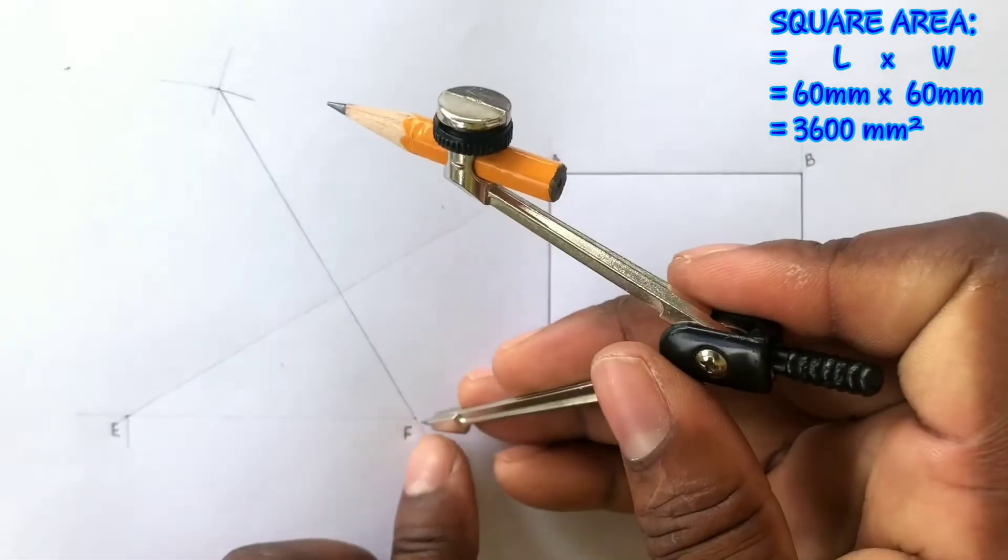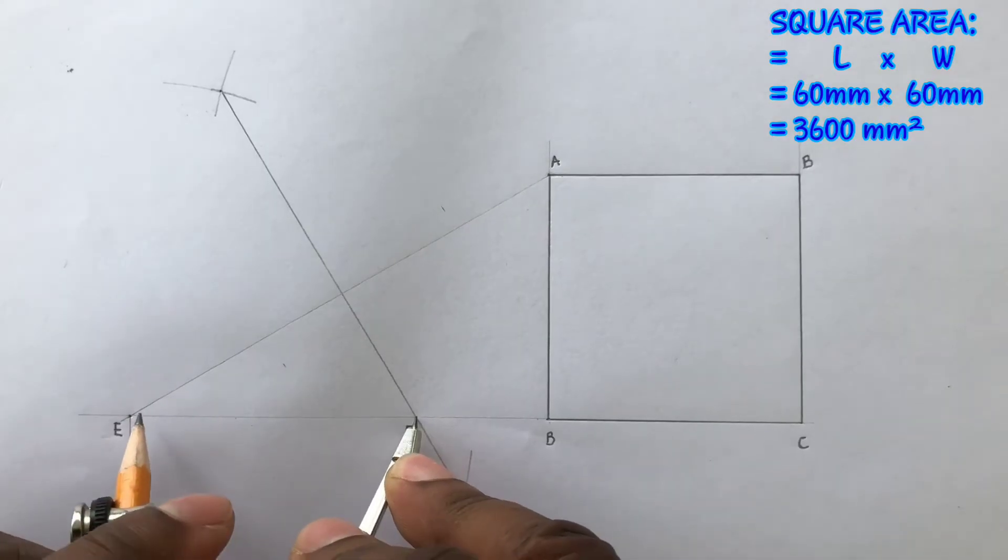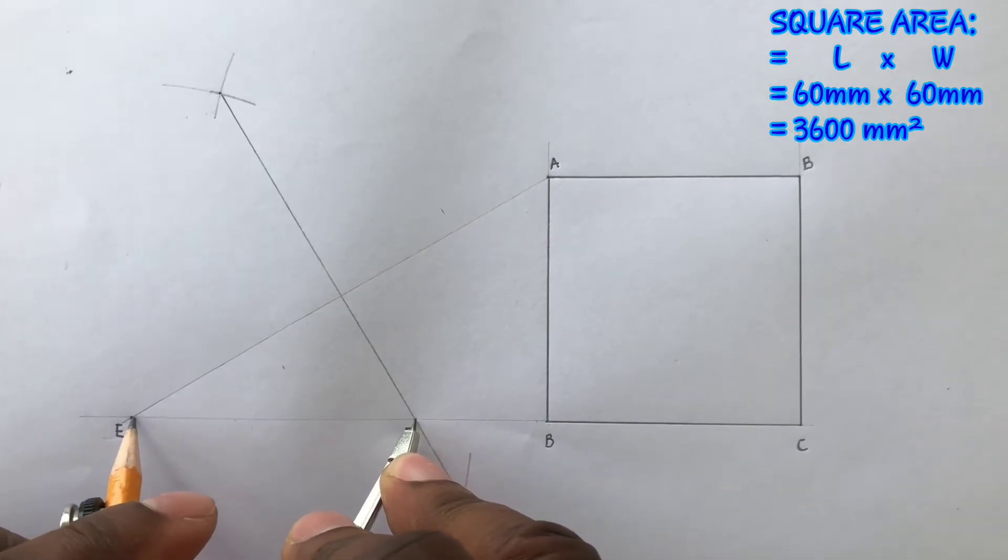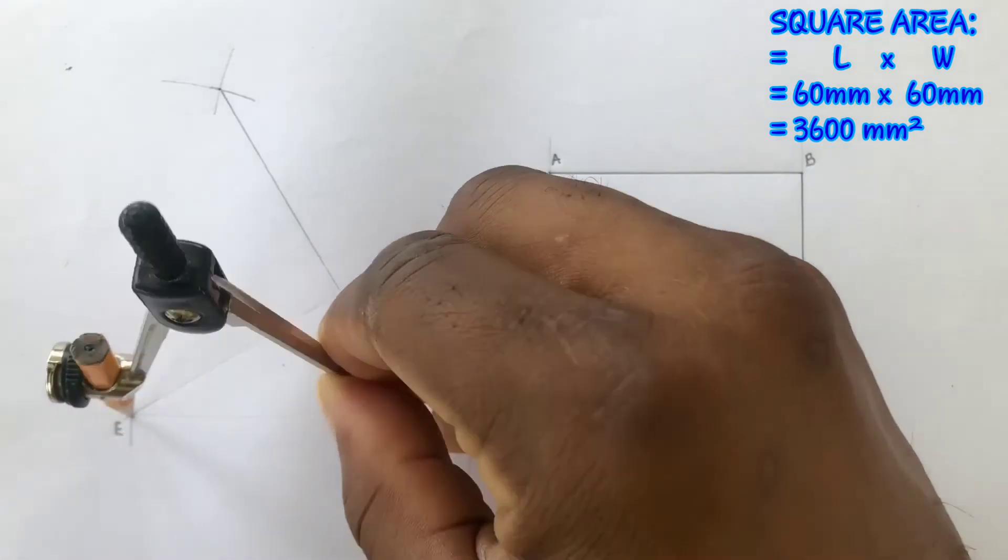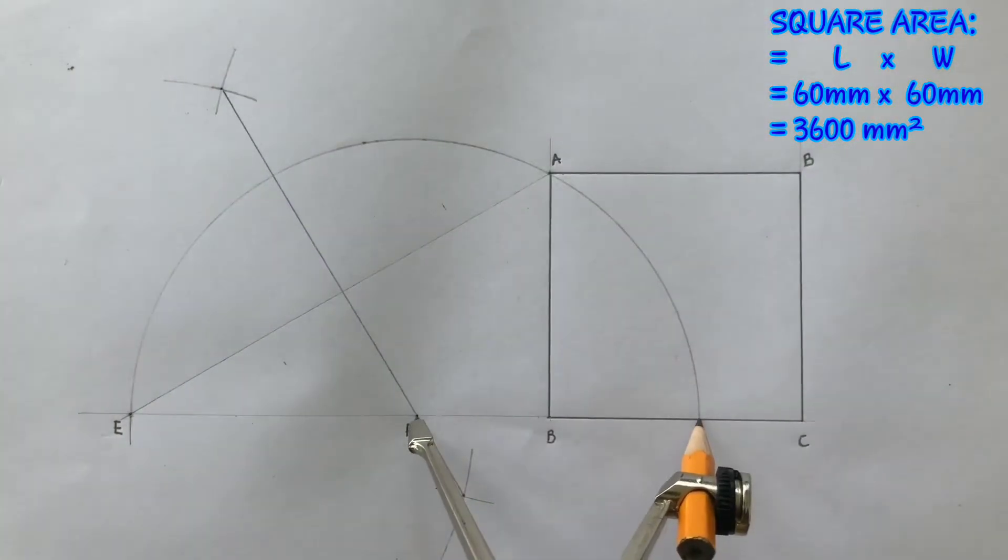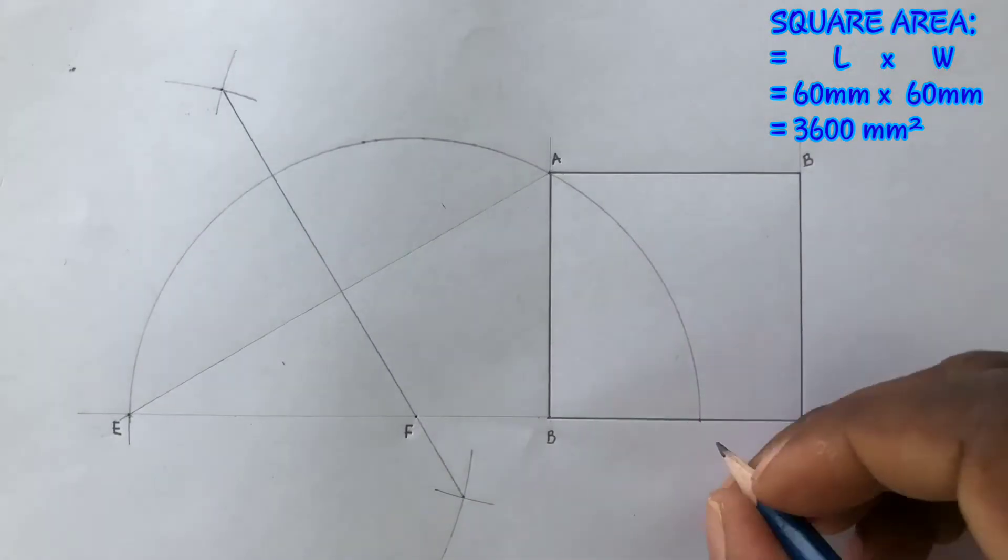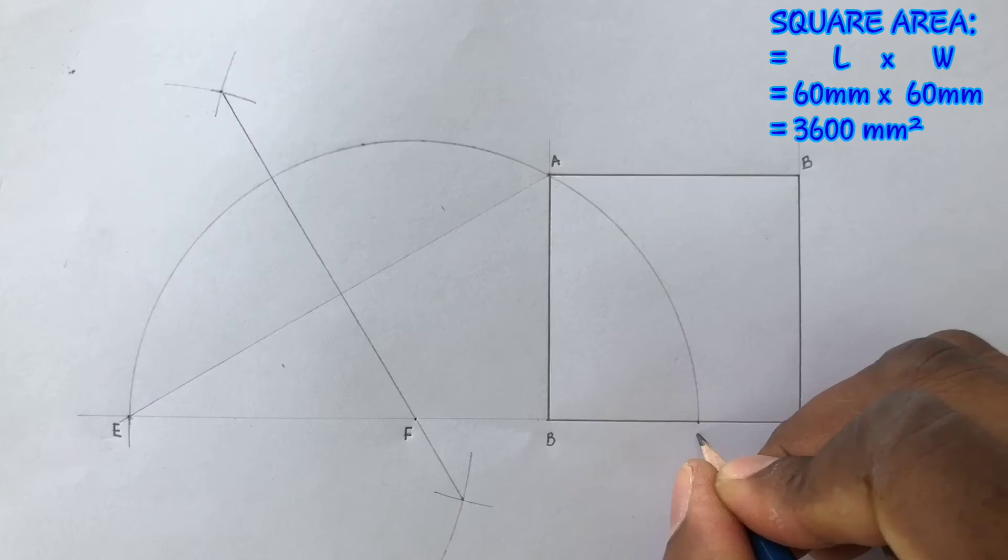With your compass point at F, open your compass to E and draw a semicircle. This semicircle will pass through point A. The semicircle intersects the BC line giving us point G. Label point G.